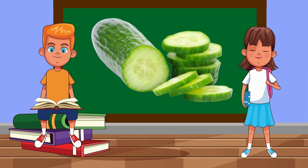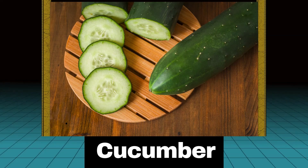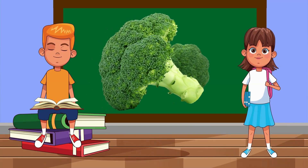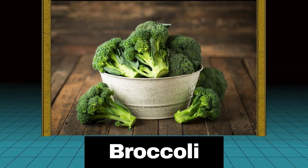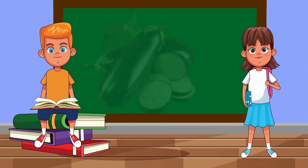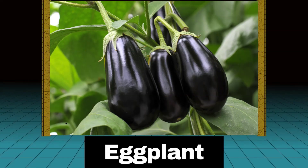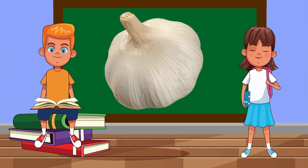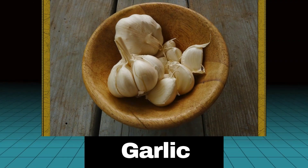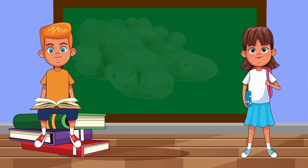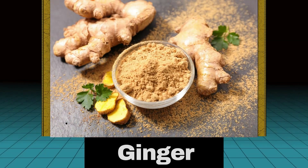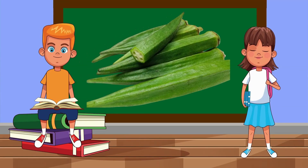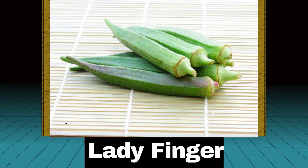What is this called? Coriander. What is this called? Cucumber. Can you name this? Broccoli. What is this called? Eggplant. Can you name this? Garlic. What is this called? Ginger. Can you name this? Ladyfinger.